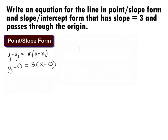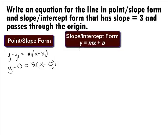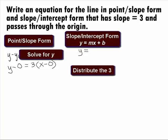Next, we want to write the equation in slope-intercept form, which is y equal to mx plus b. This means we want to solve this equation for y. Distributing the 3 through the parentheses, we get y equal to 3x.